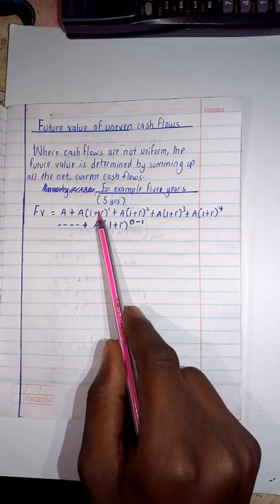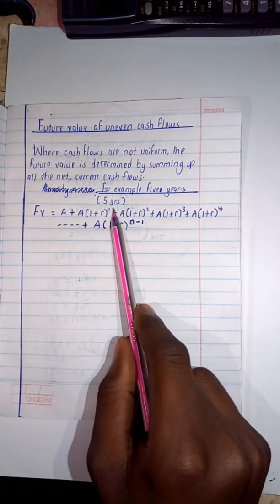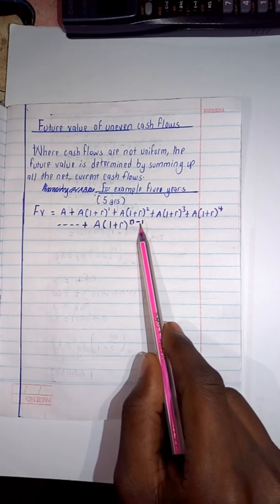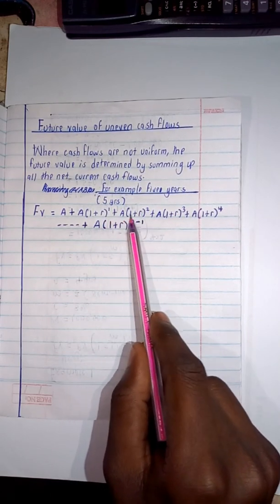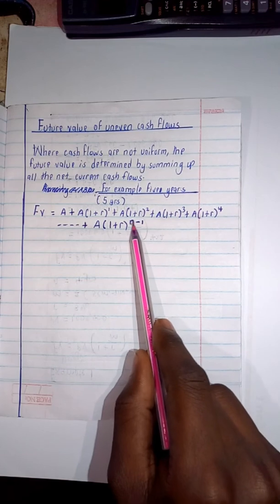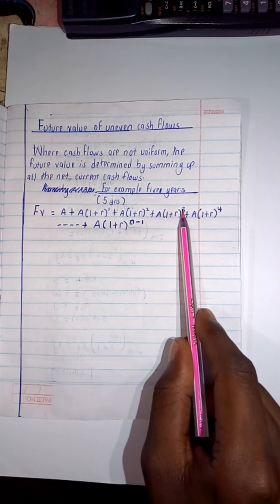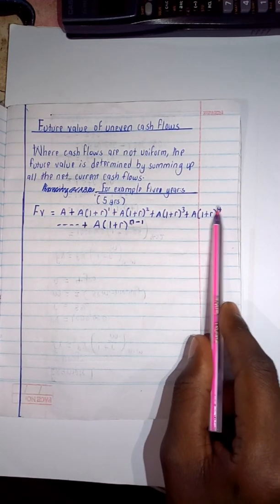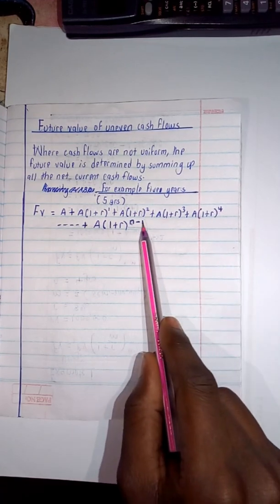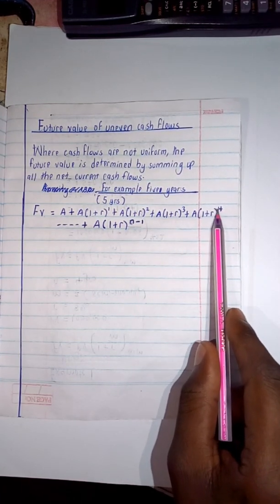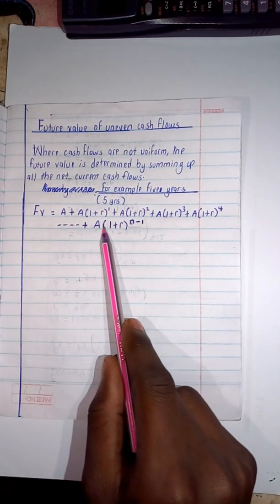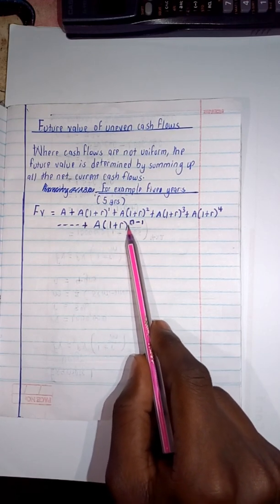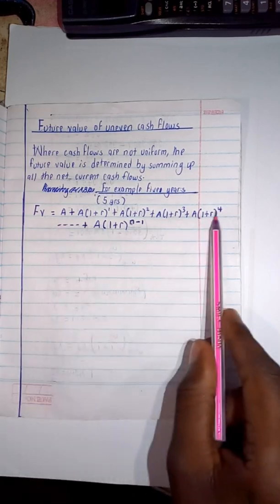Now this one is going to come as a result of, if this is year two, it's going to be two minus one resulting to one, then same with this - it's going to be three minus one resulting to two, and this one is going to be four minus one resulting to three, and this one will be the fifth year which is going to be five minus one resulting to four. And then if you are continuing, maybe if you were given more years, it will be A(1+r)^(n-1), and that's how you find out the future value of uneven cash flows.